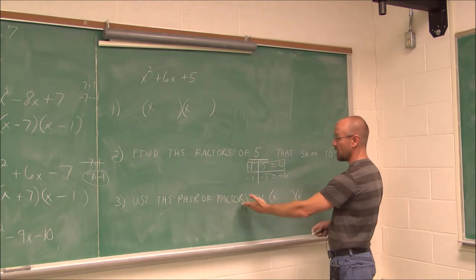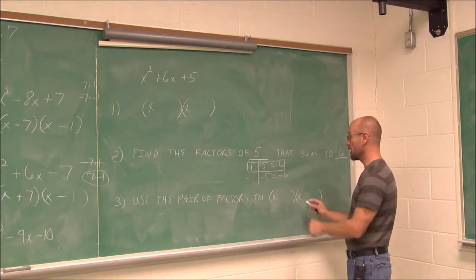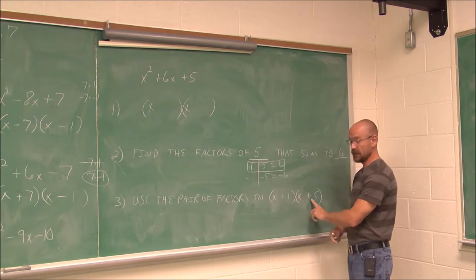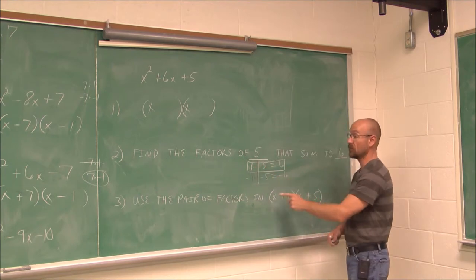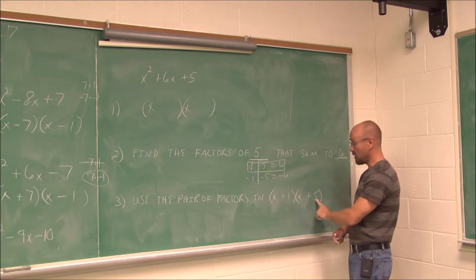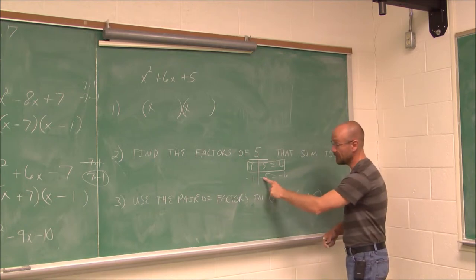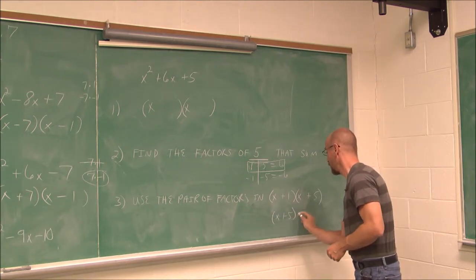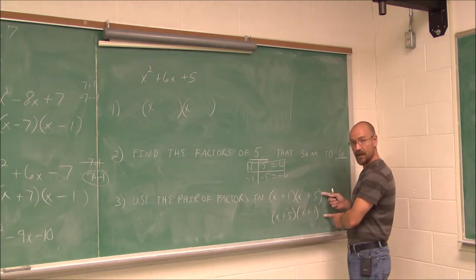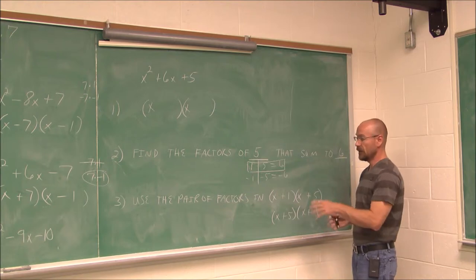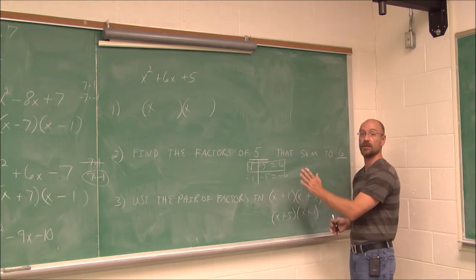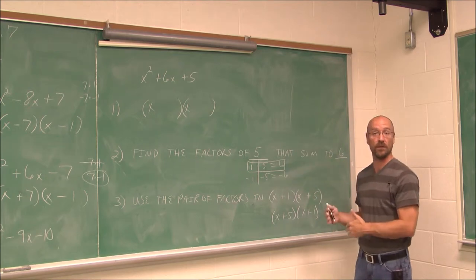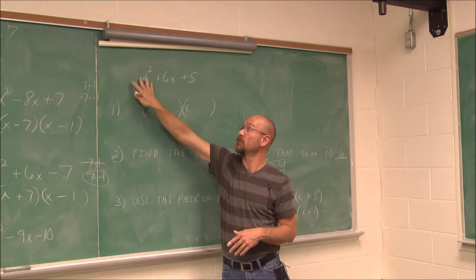The last step: use the pair of factors found — positive 1 and positive 5. The order we put them in doesn't matter, but their signs do. This is because of the commutative property of multiplication: 3 times 2 is the same as 2 times 3. So that's the three steps to factor a trinomial where the first coefficient is 1.